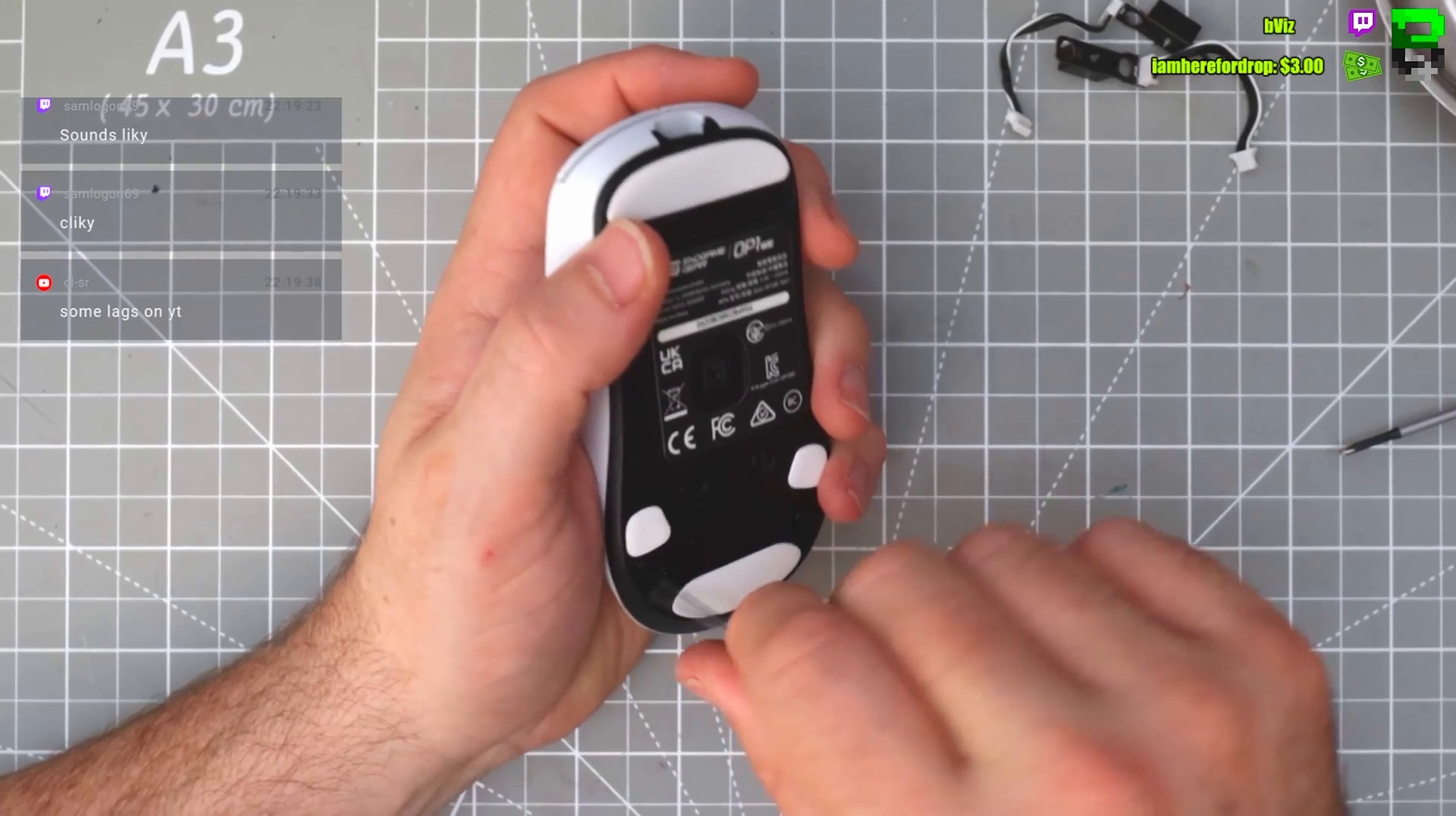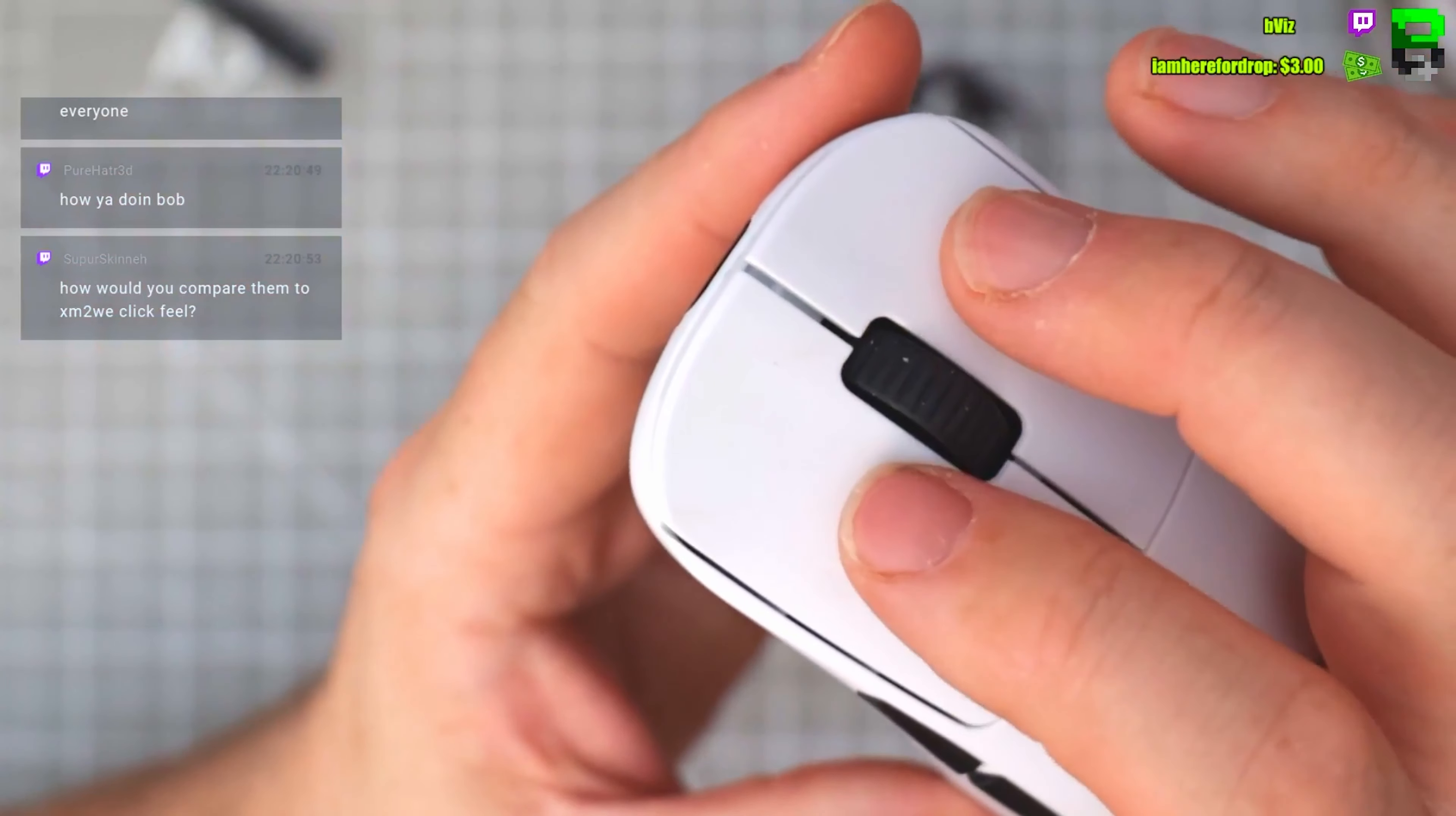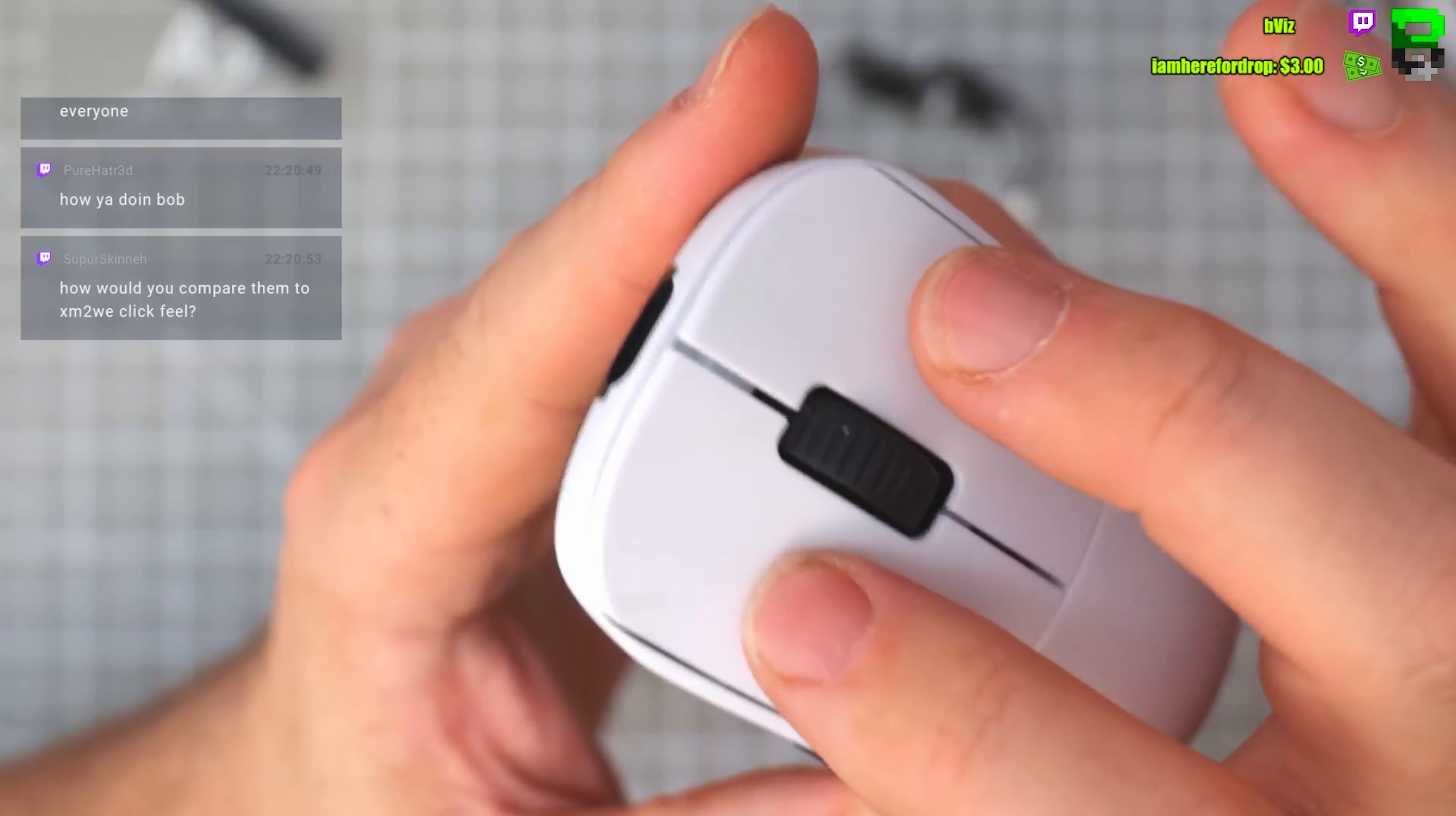So are these lighter now we switched them out? You know what, I think they definitely are. The old ones I'd say were like Kailh 4s, maybe a little bit stiffer. These feel more like a Kailh 8, and for OptoMX they still are very, very, very snappy.